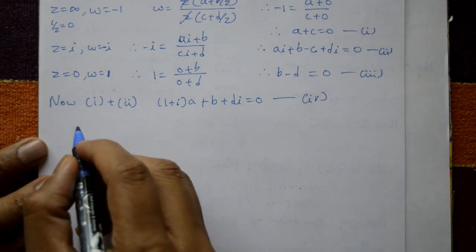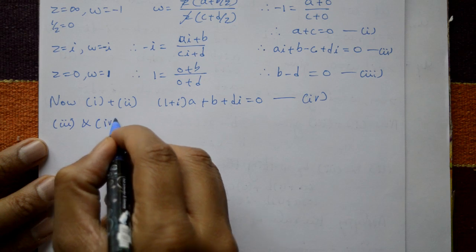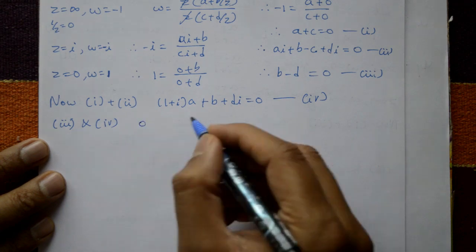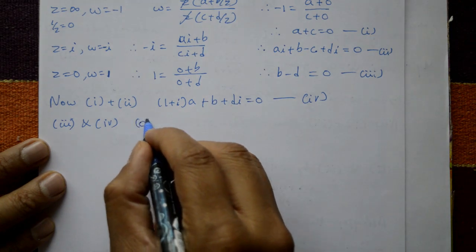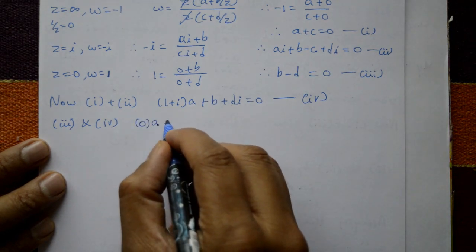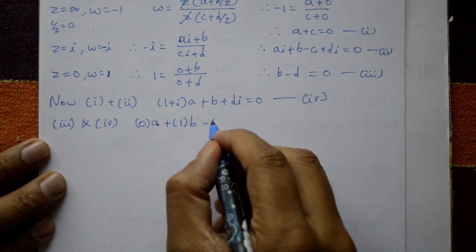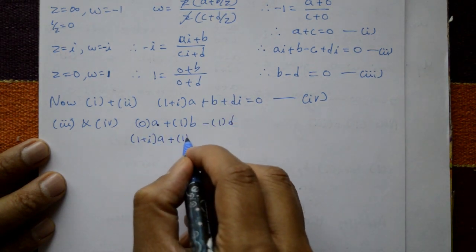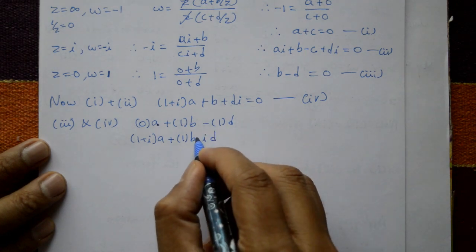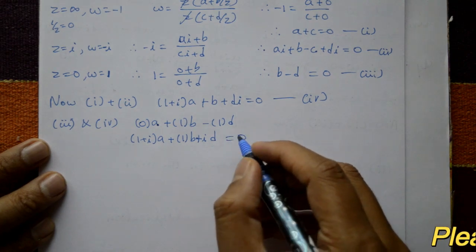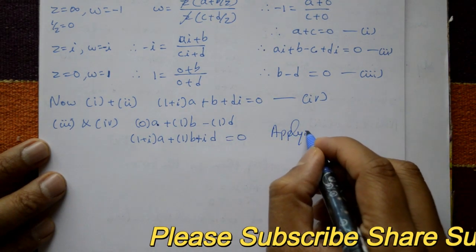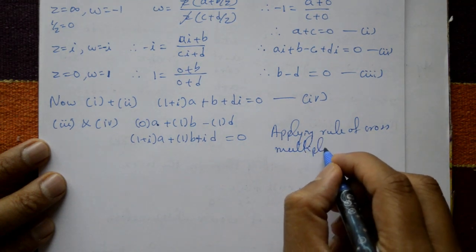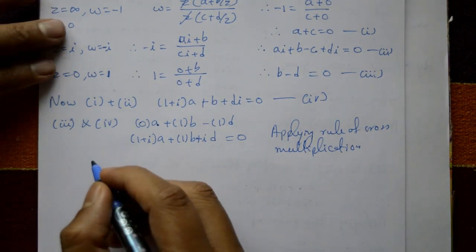Now taking equation number three and equation number four, writing them in matrix form for cross multiplication. Equation three has coefficients: 0 for a, 1 for b, minus 1 for d. Equation four has coefficients: (1 + i) for a, 1 for b, i for d. Now applying the rule of cross multiplication.